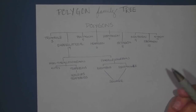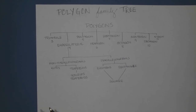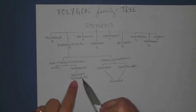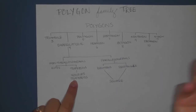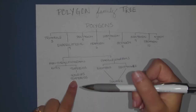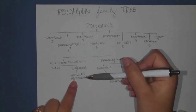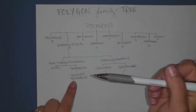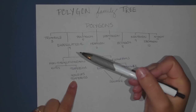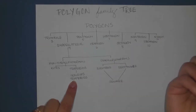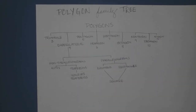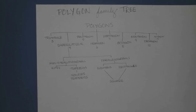Any category a shape falls under would be included. For example, if I gave you an isosceles trapezoid and asked for all possible names, you would say it's an isosceles trapezoid, also a trapezoid, a quadrilateral, and a polygon. So there you go — there's your polygon family tree. Thanks for watching.